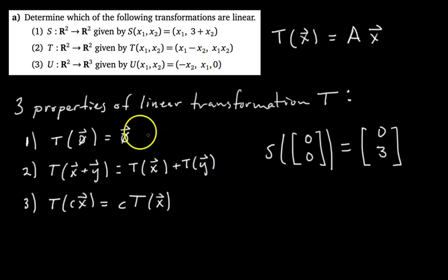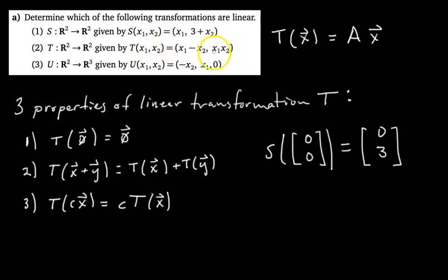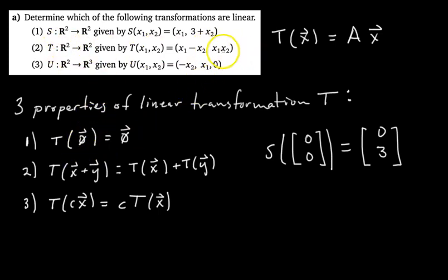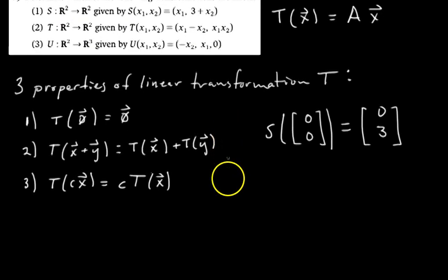Does transformation T map the zero vector to the zero vector? If X1 and X2 both equal zero, the first component would be zero minus zero, which is zero. And the second component would be zero times zero, also zero. So if we input the zero vector into T, we get the zero vector as output. It meets the first condition.